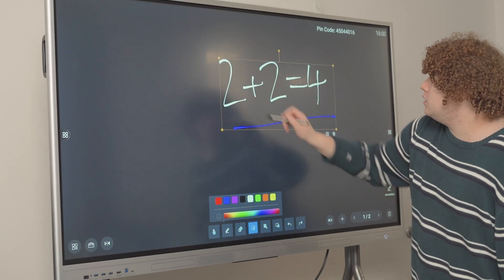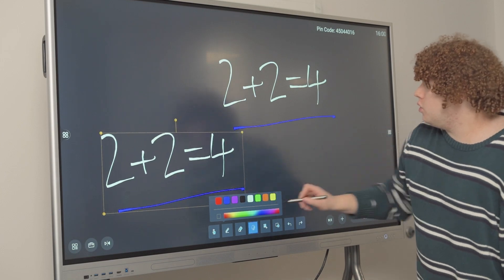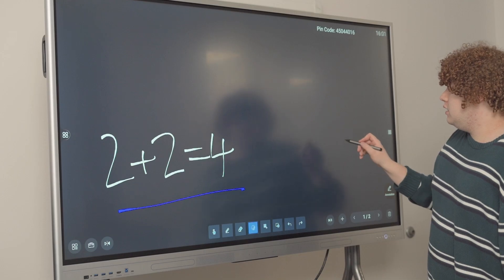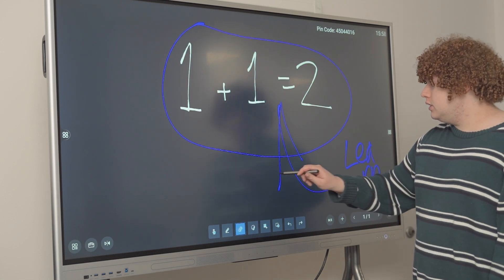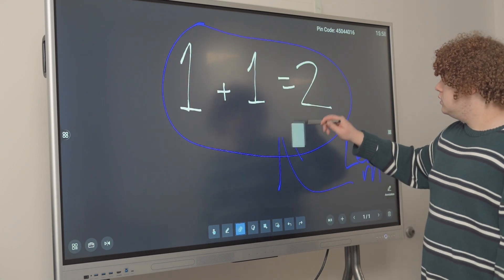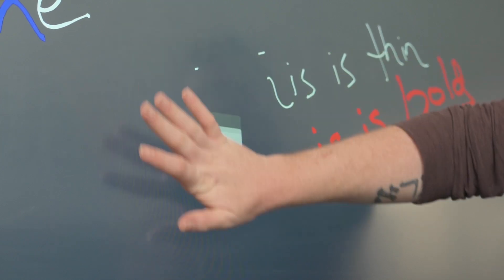You can select things by circling them, and then you can copy them, expand them, delete them, or change their color. To erase, tap on the eraser button and use your pen to erase, or you can use the palm of your hand.